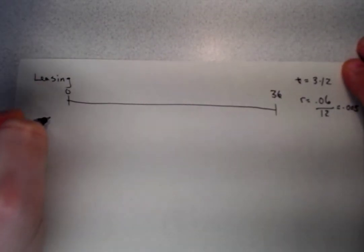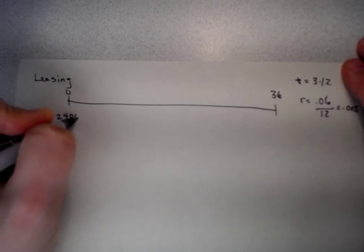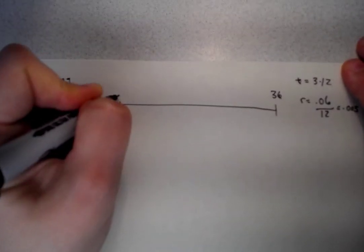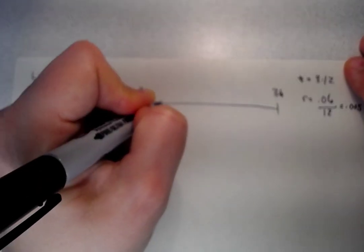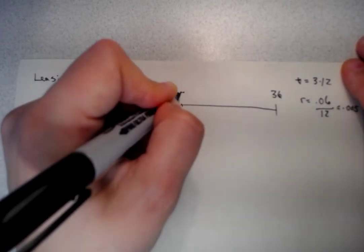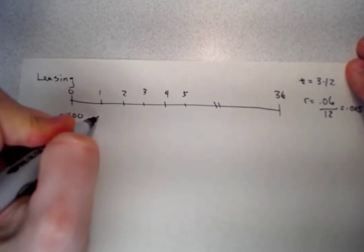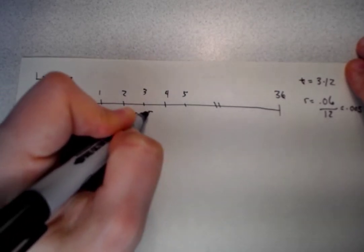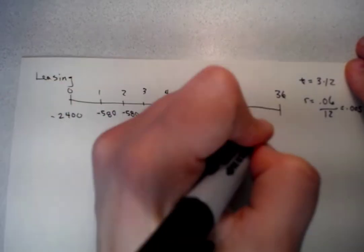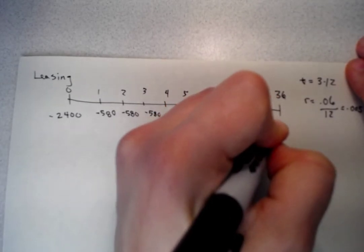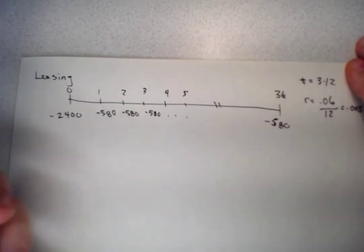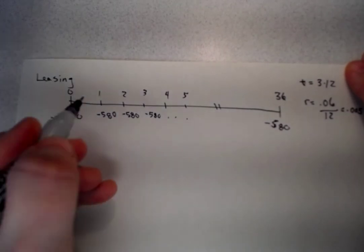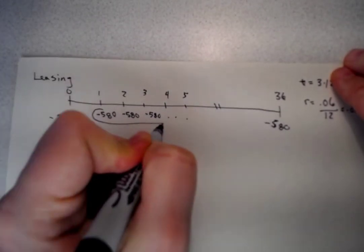Now, if we're going to lease the car, we're going to spend $2,400 today, and then we spend $580 a month for the next three years. This is an annuity.